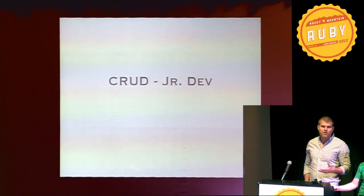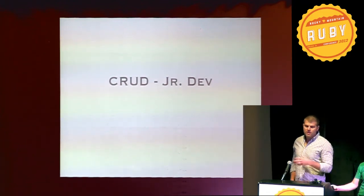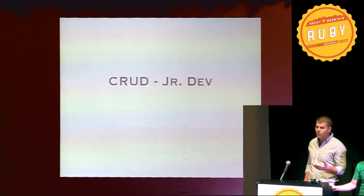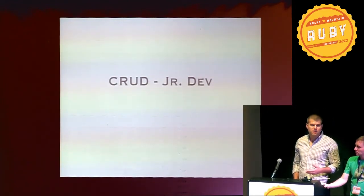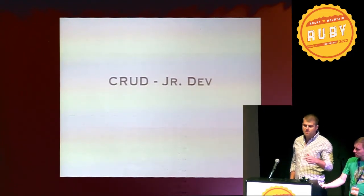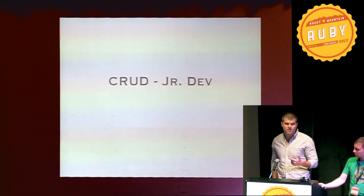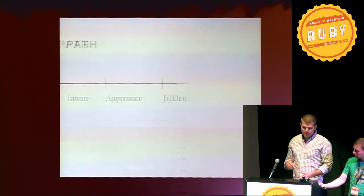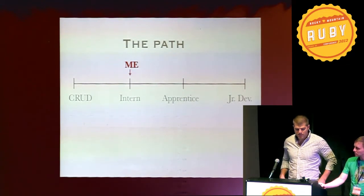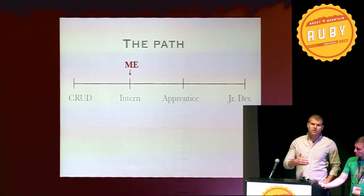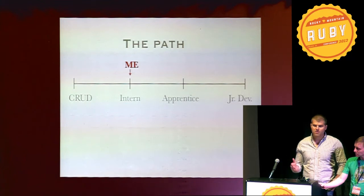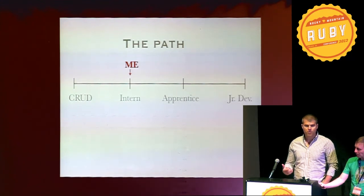Being in the third class of Code Academy, I was able to watch as two classes went before me and I just started asking questions like, where did this get you and where are you at? They kind of had to go through two steps before they got to the junior dev place. So this is the path I'm currently trying to walk — going from CRUD to intern, to apprentice, to hopefully junior dev.